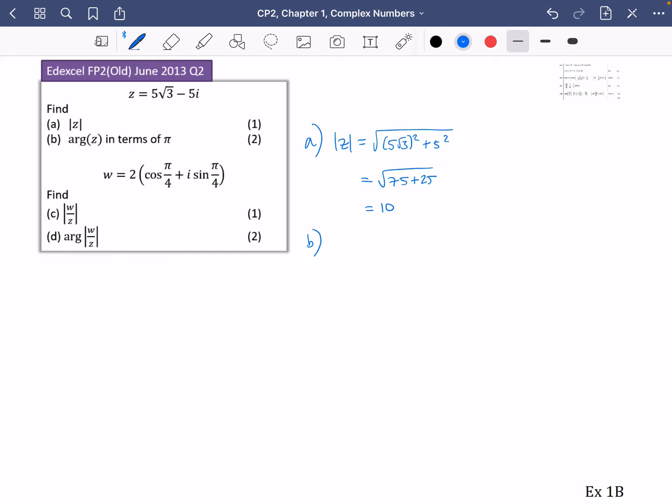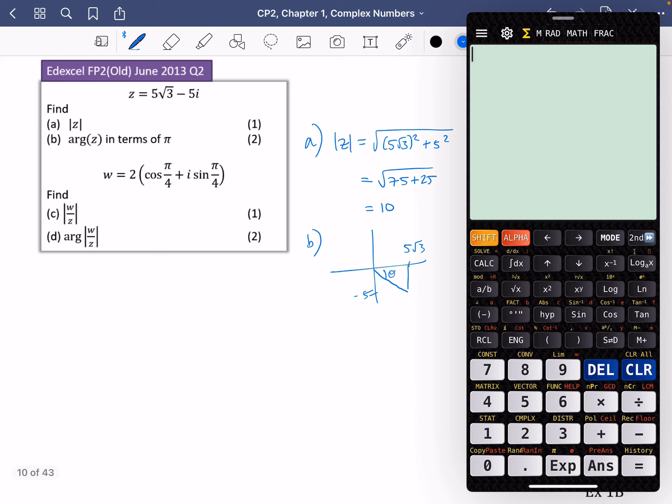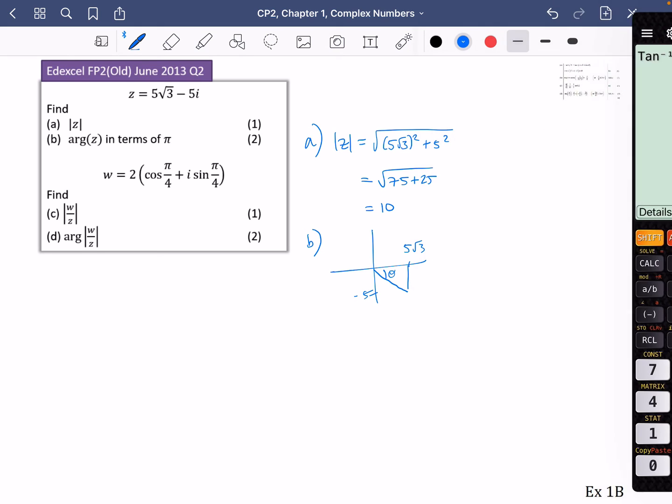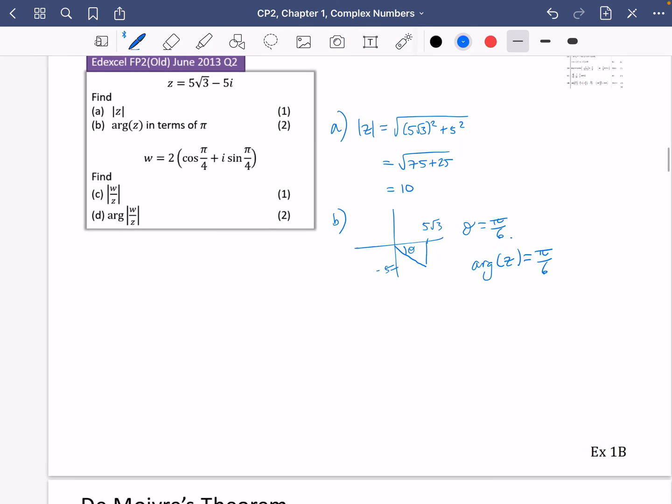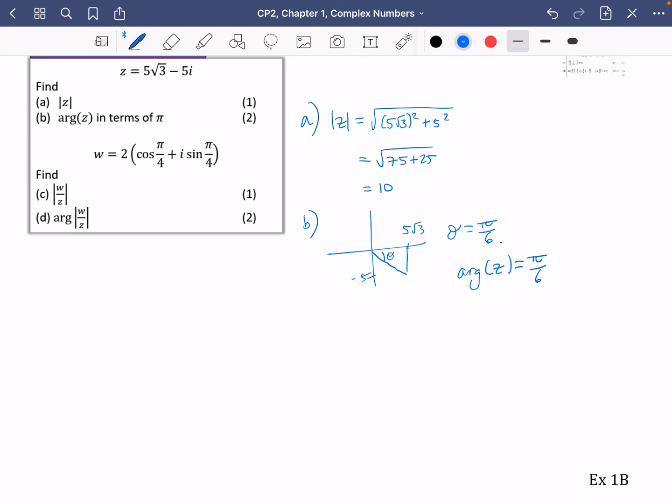I always like to do a sketch for this next bit. So we have that z is 5 root 3 minus 5i. So clearly the argument is going to be negative. And to find this angle that I've got here, I will do the inverse tan of the opposite, which is 5, divided by the adjacent, which is 5 root 3, which is just pi over 6. So theta is pi over 6. So the argument of z is pi over 6.